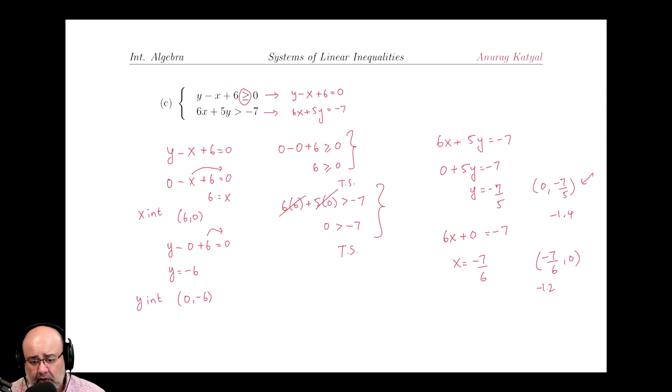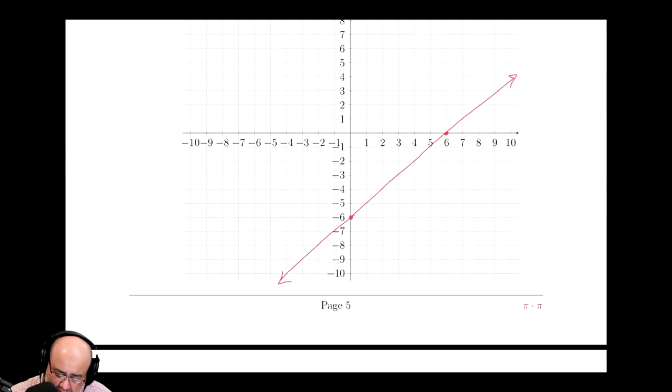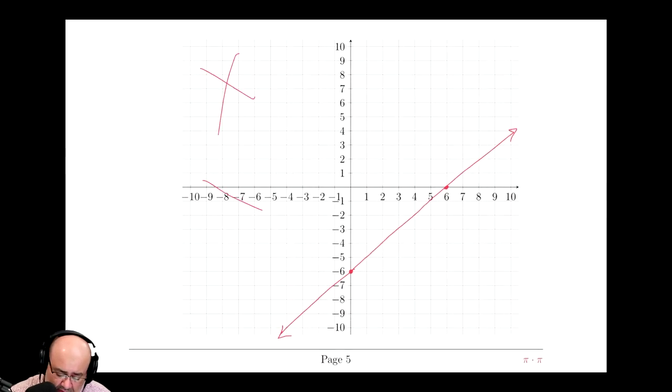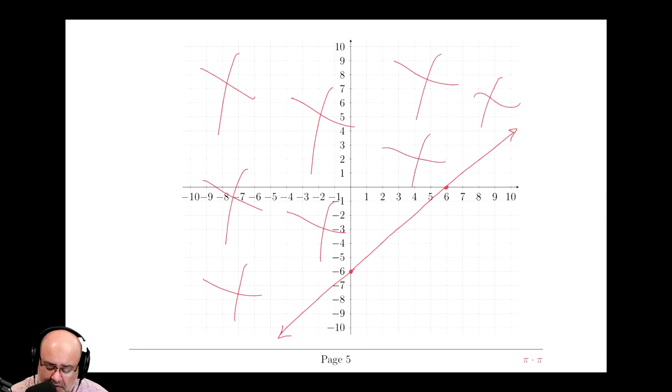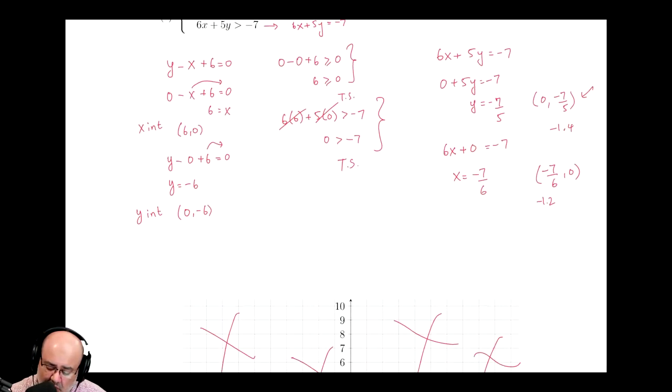6 is indeed greater than or equal to 0. So that means the origin is telling us the truth, so we should shade on the side of the origin. So all of this is shaded for the first line.